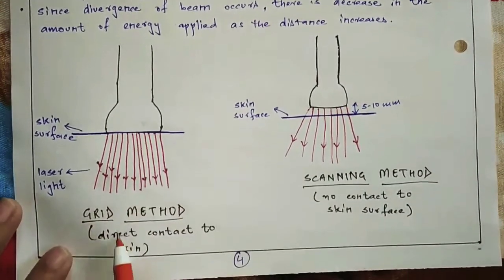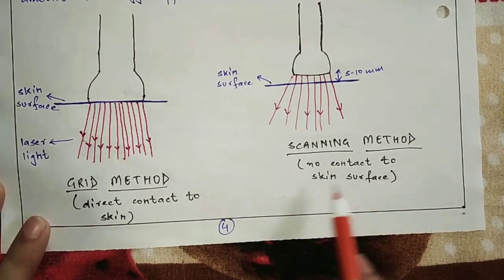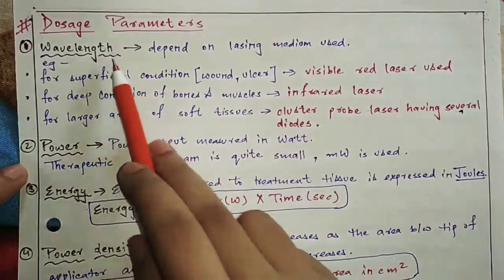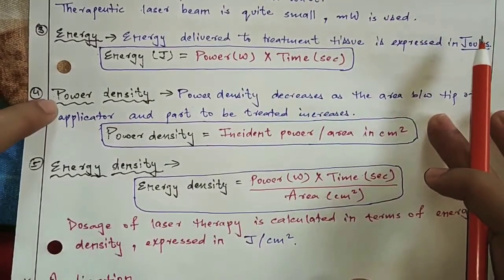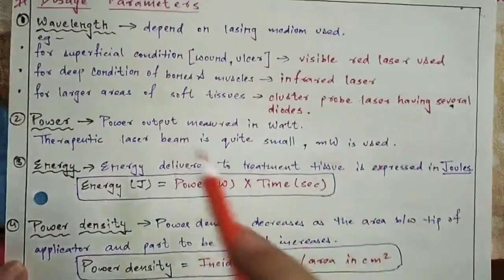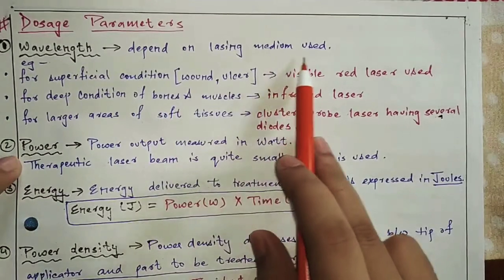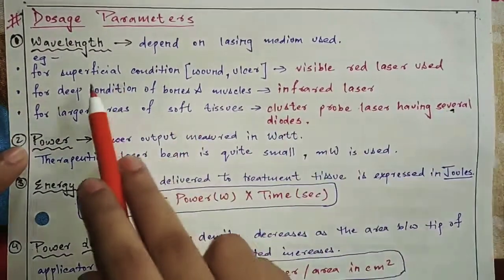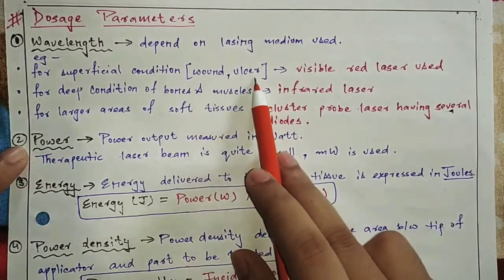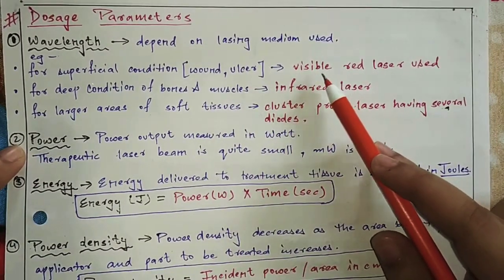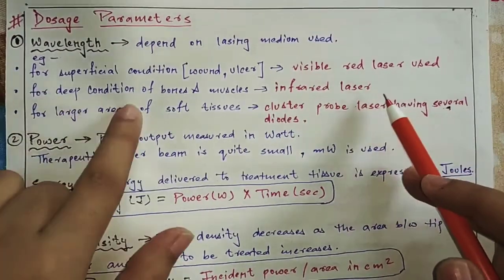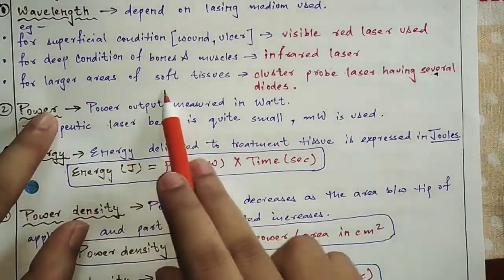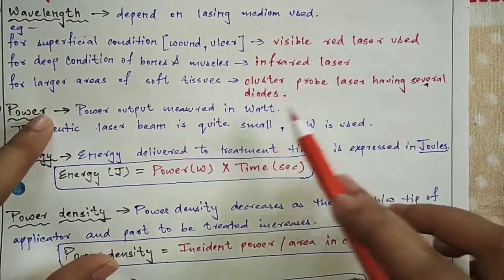Now let's talk about the parameters. We will discuss wavelength, power, energy, power density, and energy density. The wavelength depends on the lasing medium used. For superficial conditions such as wounds or ulcers, we use visible red laser. For deep conditions involving bone and muscle, we use infrared laser. For large areas of soft tissue, we use a clustered probe laser having several diodes. Power output is measured in watts, but for therapeutic laser use, we use milliwatts.